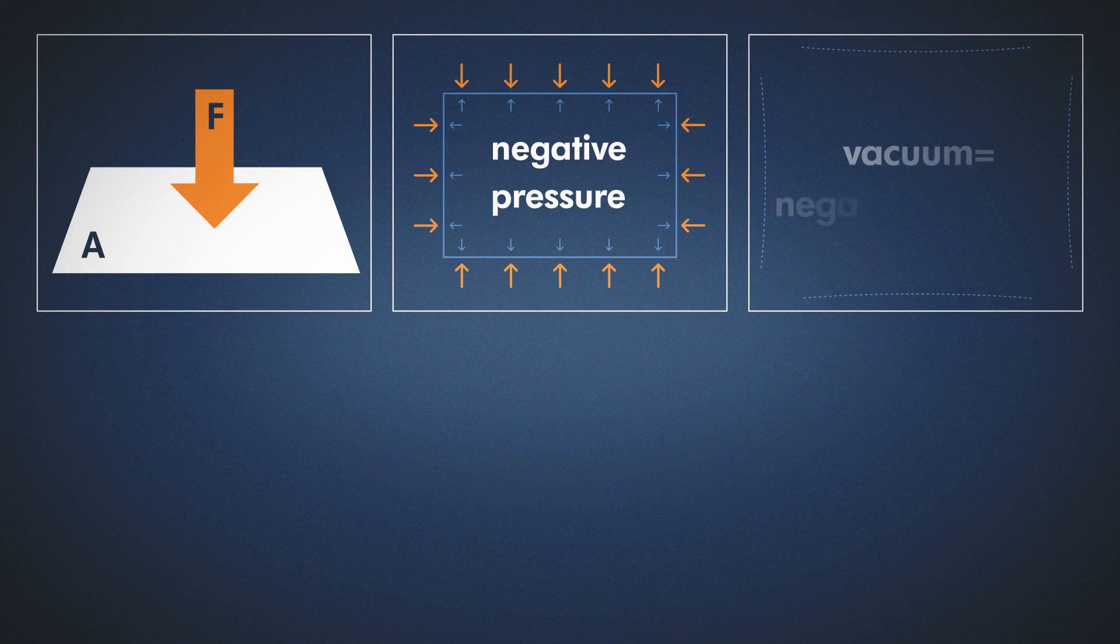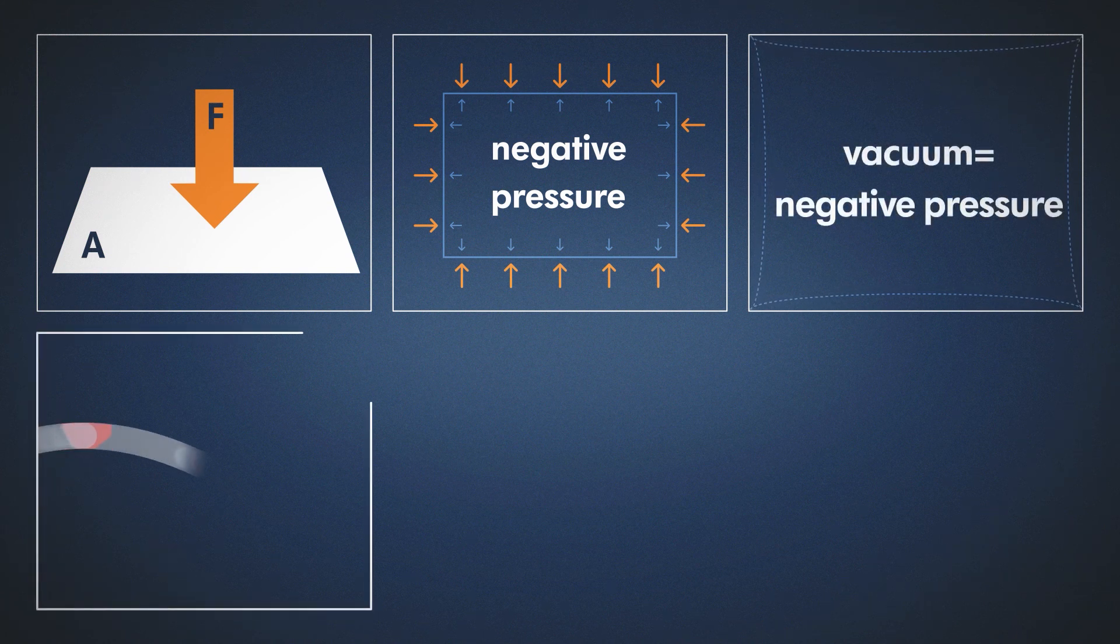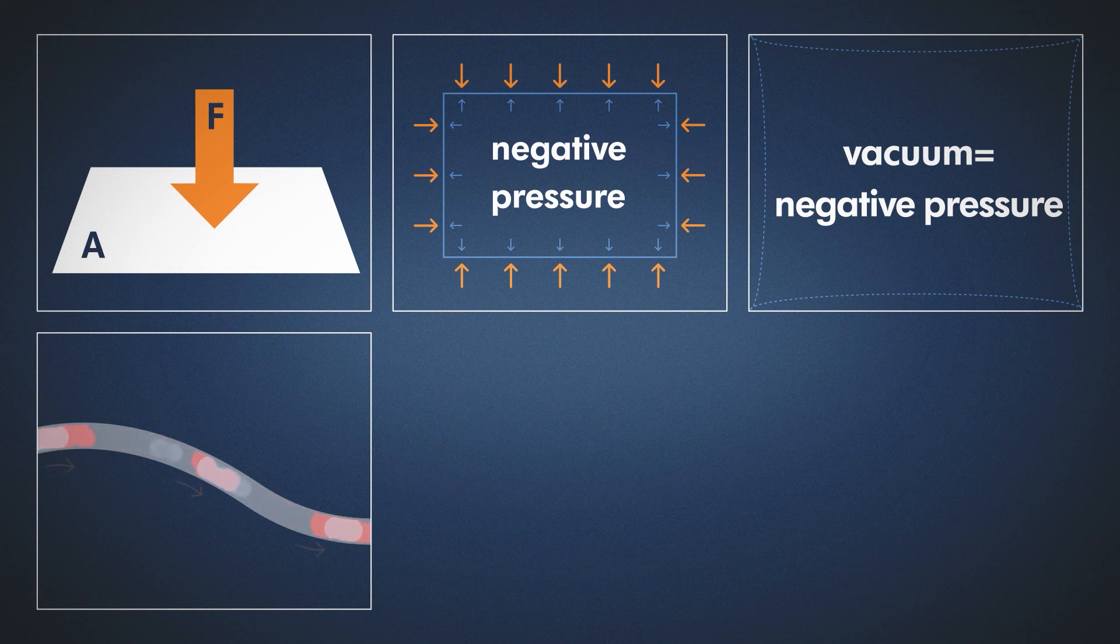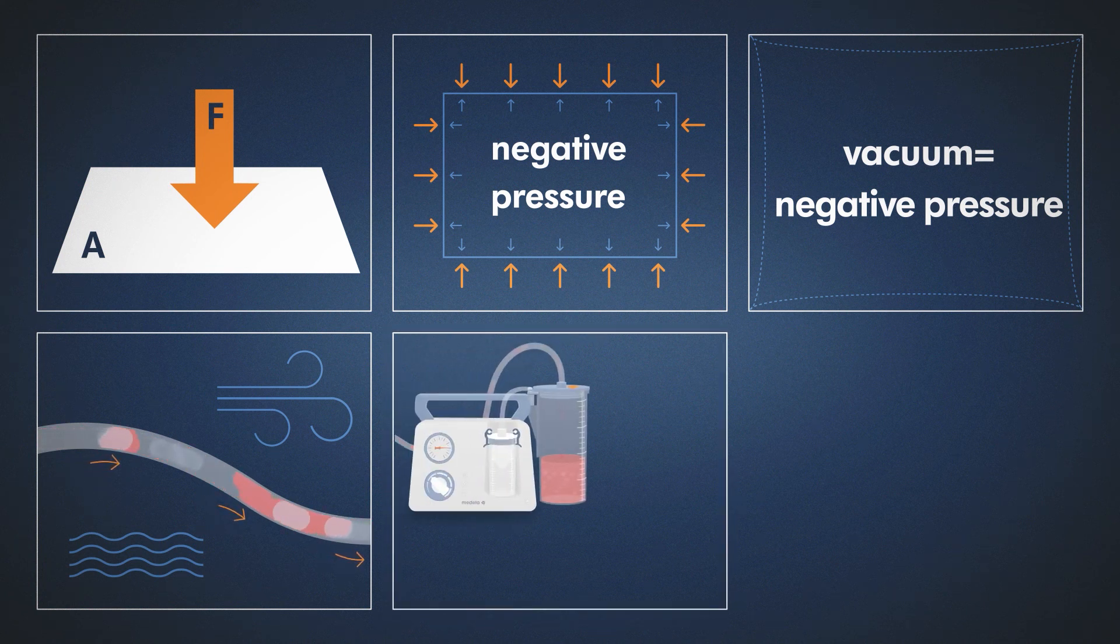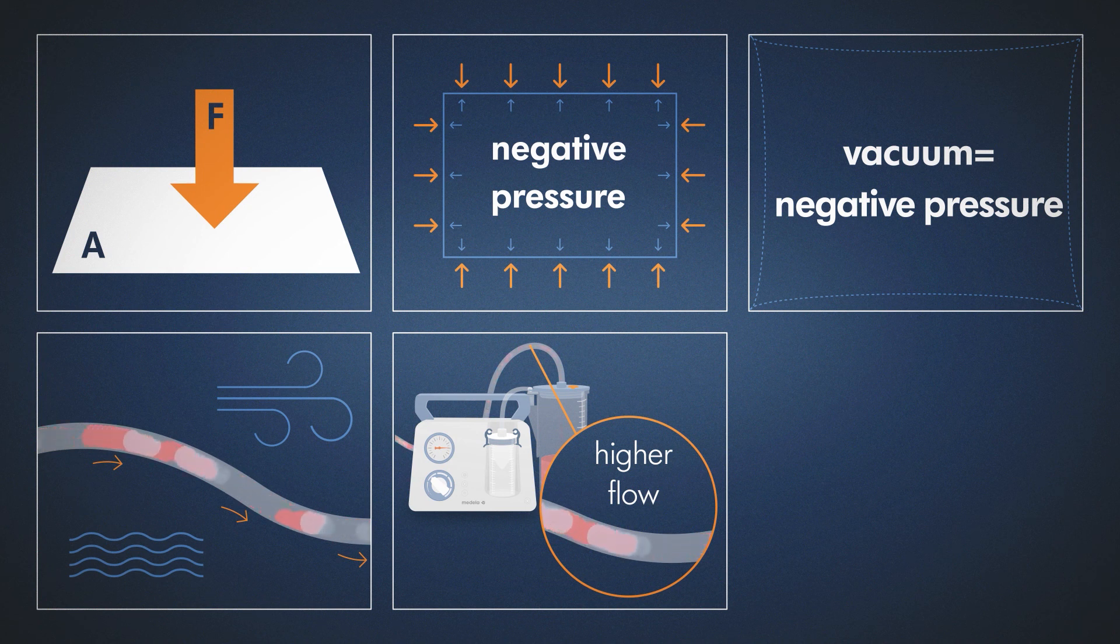To put it simply, vacuum can be defined as negative pressure. With our medical suction systems, we apply negative pressure to transport air or liquids, or both. A pump with a higher flow builds up a vacuum faster and can draw more fluids and air while maintaining negative pressure.